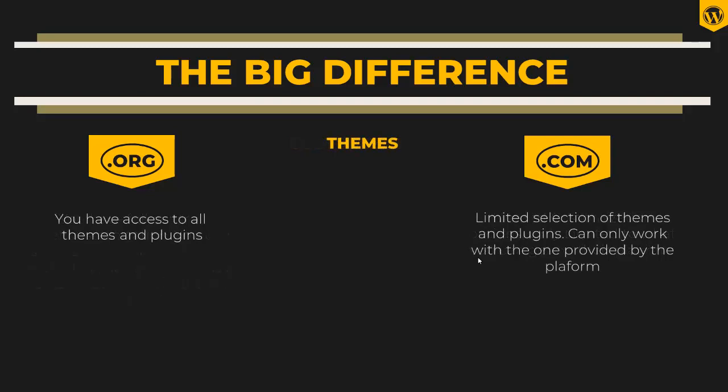With .org, you have access to all themes and plugins. You can search for themes from external sources — for example, you can go to ThemeForest and get any theme you want. But with .com, you are limited to selected themes and plugins; you can only use the ones provided within the .com platform and cannot bring in themes from external sources.